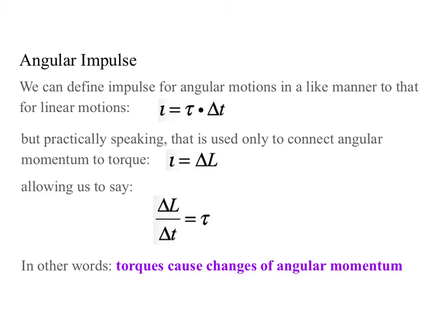We can define impulse for angular motions in a like manner to that defined for linear motions. Here we use the Greek letter iota, which is like an I without its dot. You might remember that we had impulse as the force times the time — we used J, actually. Iota is sort of like an old school I. There was no J in ancient Greek, so there's no easy way to bring that over. Practically speaking, however, people don't really talk that much about angular impulse except to connect it to angular momentum by saying the angular impulse is also the change in angular momentum, just like the impulse was the change in linear momentum.